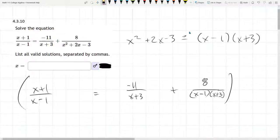What I've already done is factored the x squared plus 2x minus 3 and it factors into x minus 1 times x plus 3. That means if we multiply by x minus 1 times x plus 3, we'll clear all the denominators at the same time. So let's go ahead and do that.